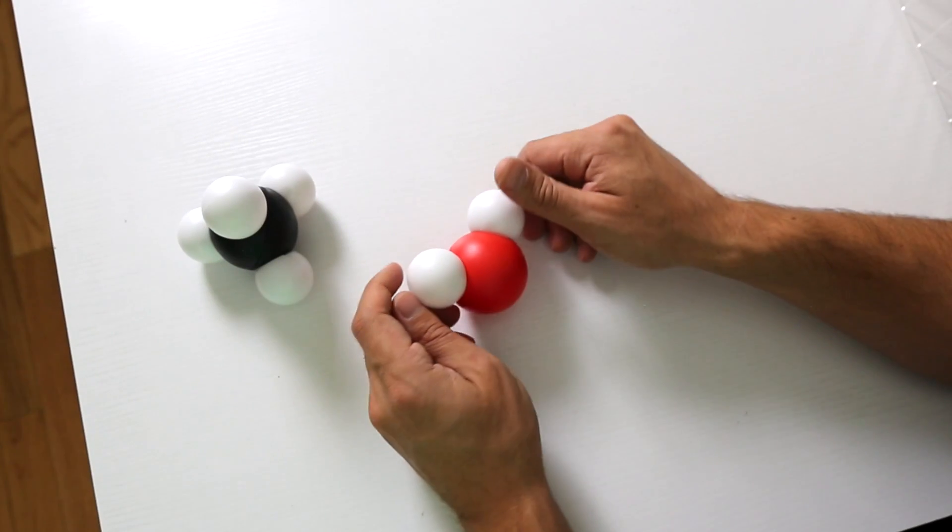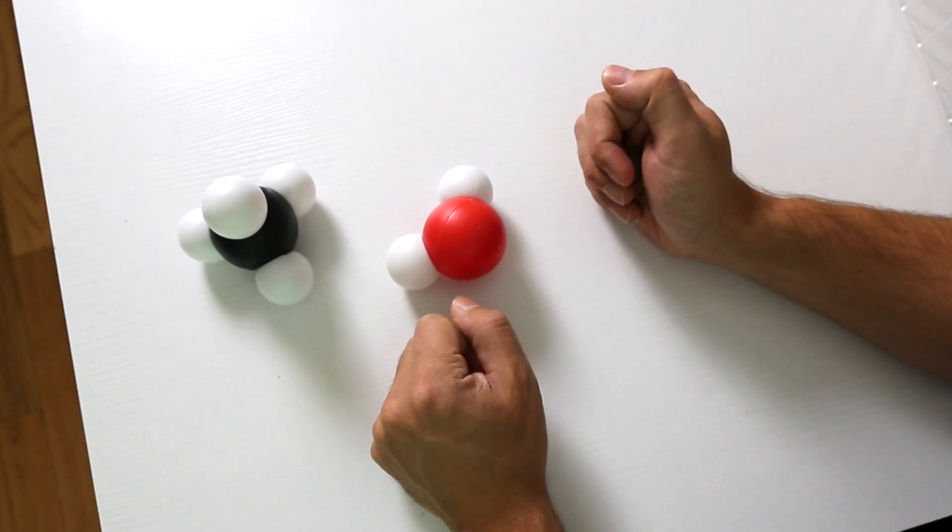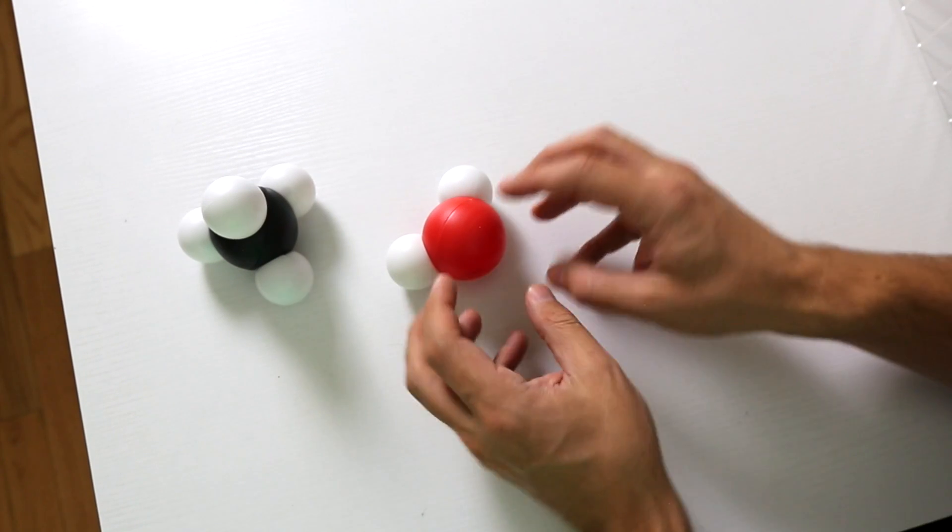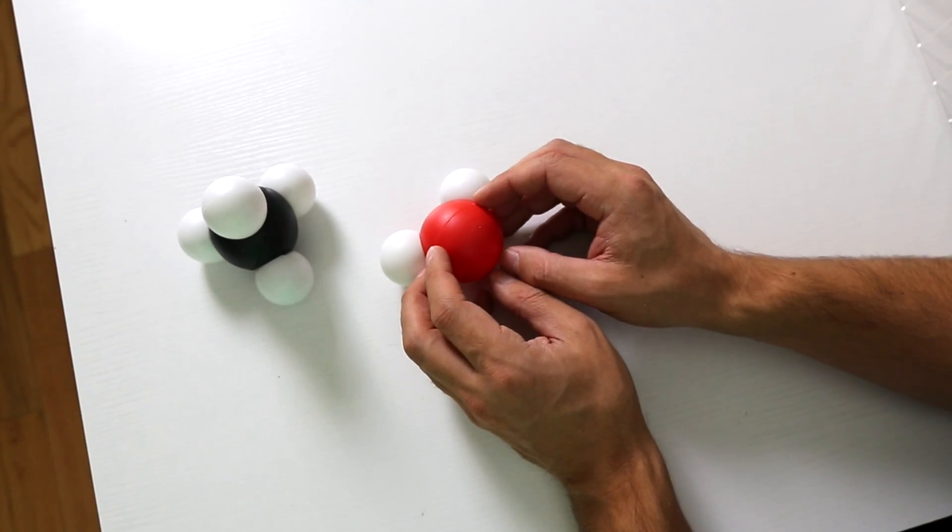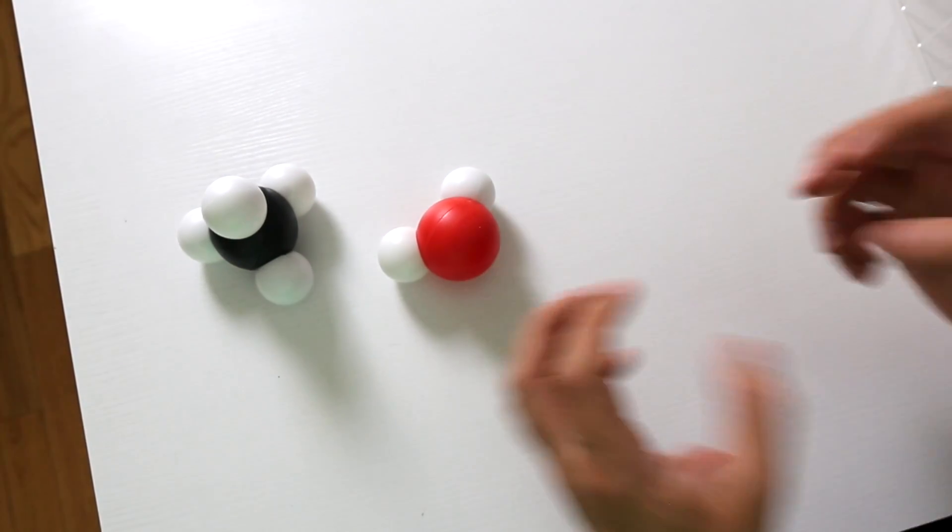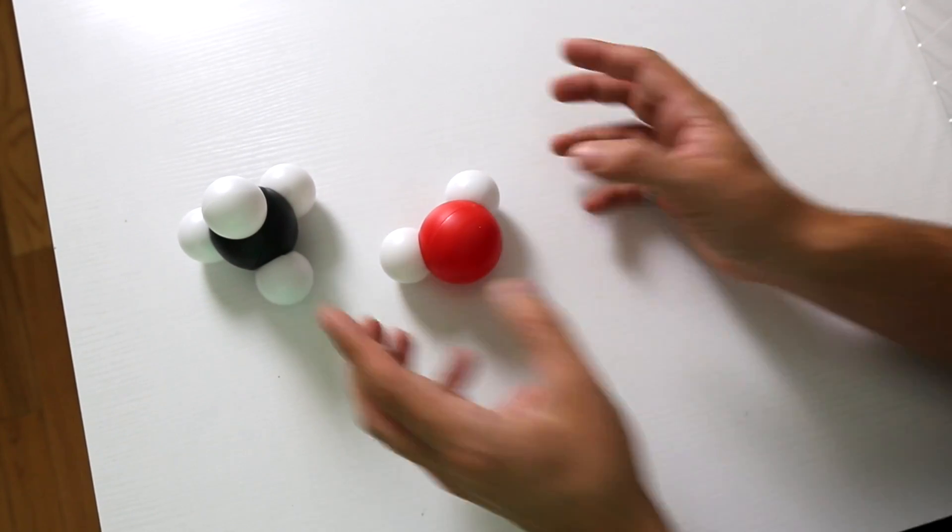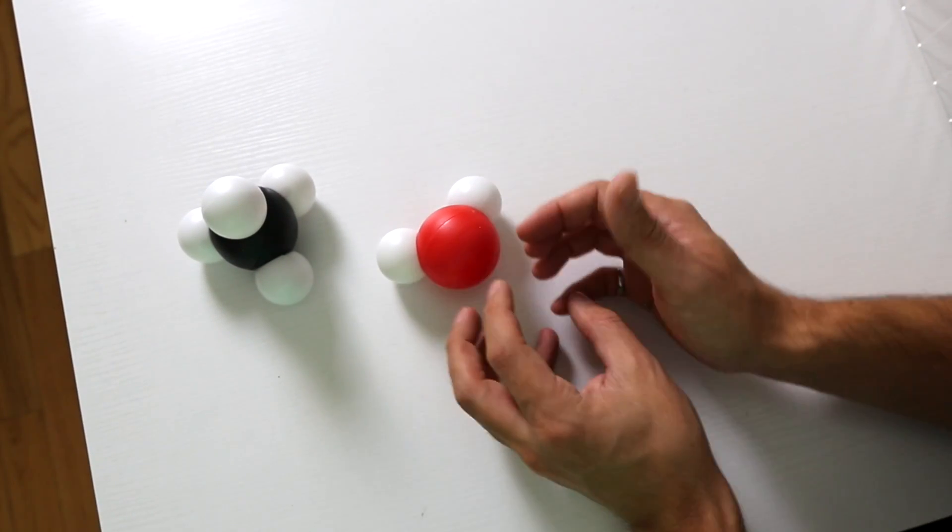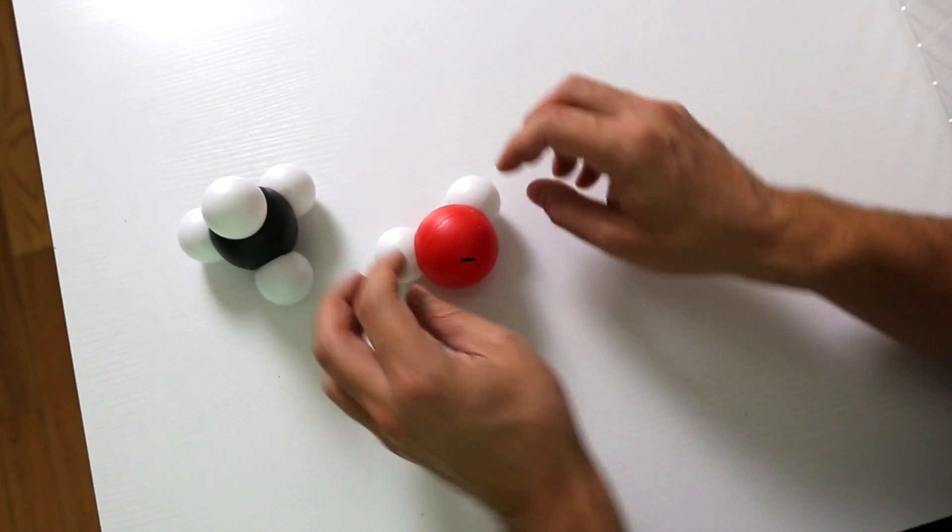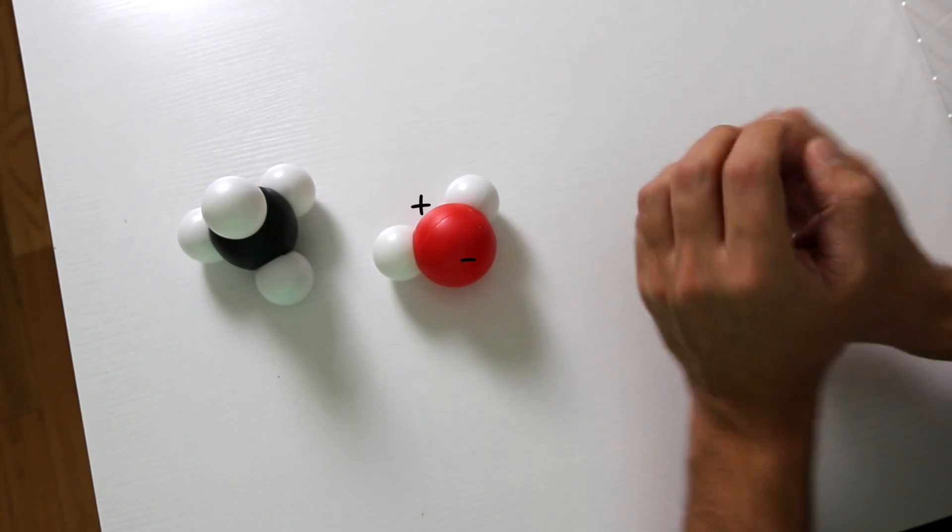That's why water has this bent shape. And that's important because oxygen is a little bit more attractive of electrons than these hydrogen atoms. So what ends up happening is the oxygen ends up being a little bit negative, and these hydrogens end up being a little bit positive.